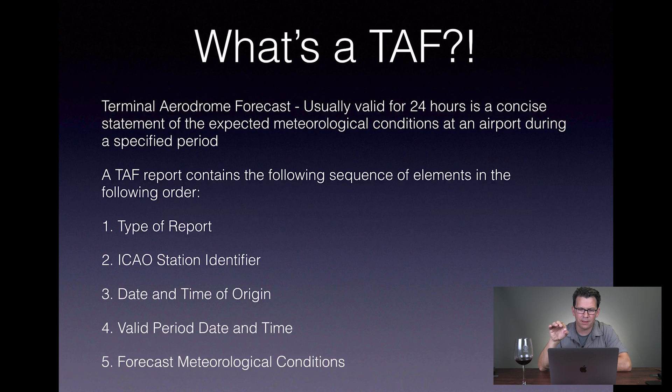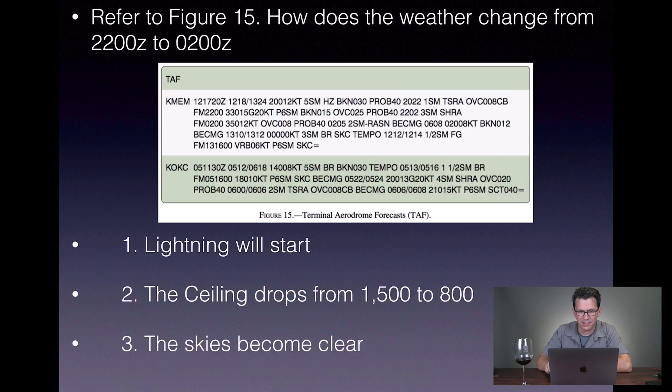So a TAF report contains the following sequence of elements in this order: It starts with the type of report, which you're just going to see probably TAF. It gives you the station identifier, the date and time that this TAF was executed, and then the valid period date and time. So the TAF is going to go from a start date to an end date, typically 24 hours. Then it's going to give you a forecast of meteorological conditions and how the weather is going to change during that forecast.